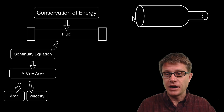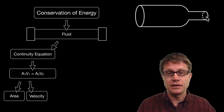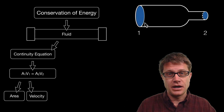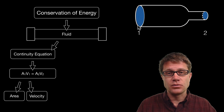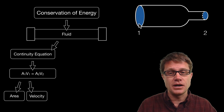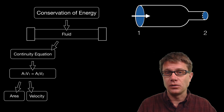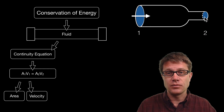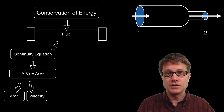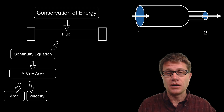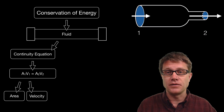If we look at a pipe with fluid flowing through it from left to right at two different points: A1 is the cross-sectional area on the left and A2 is the area on the right. Since we have a large cross-sectional area on the left we are going to have a relatively low velocity. As we move to the right and decrease that area, we are going to have a high velocity. If you know the velocity and cross-sectional area at any point in the pipe, you can figure out the velocity anywhere else.